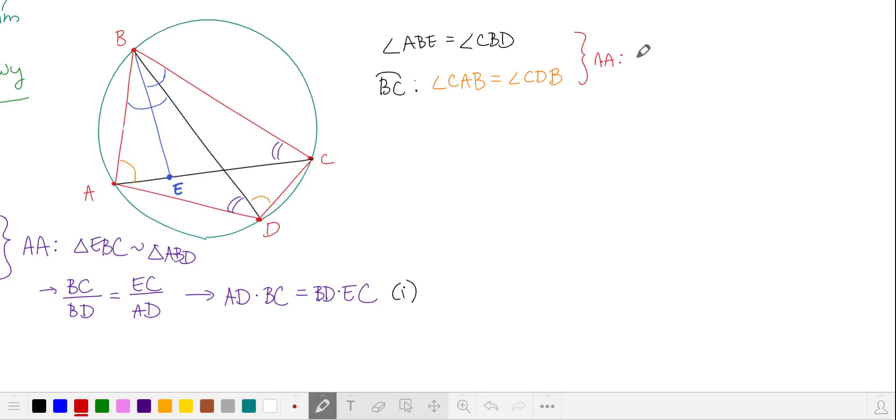And again by angle-angle, we have triangle ABE is similar to triangle DBC. We'll compare two pairs of corresponding sides. AB over DB is equal to AE over DC. And multiplying, we get this equation. We'll call it equation 2.